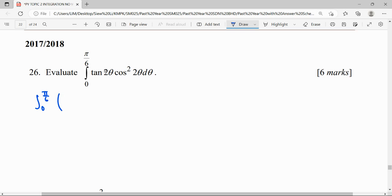Notice that tangent is sine over cosine. The cosine here can be simplified - cos(2θ) in the numerator, cos squared can be divided, so we have a remaining cos(2θ) only. Now our question is sin(2θ) times cos(2θ).